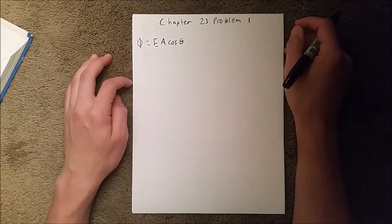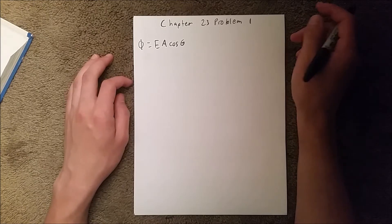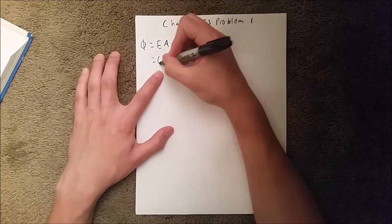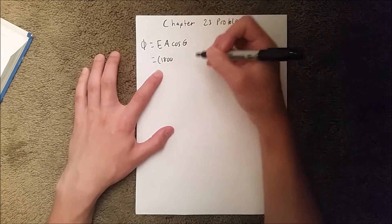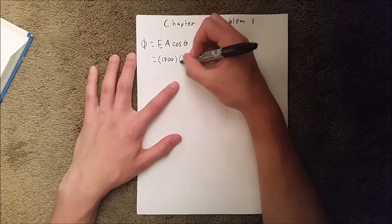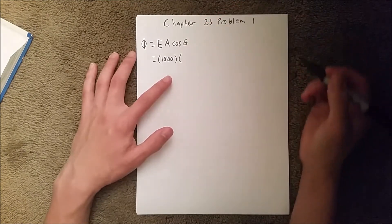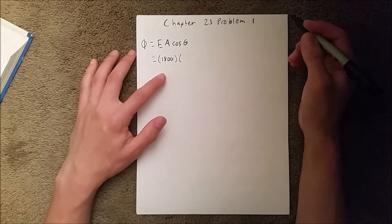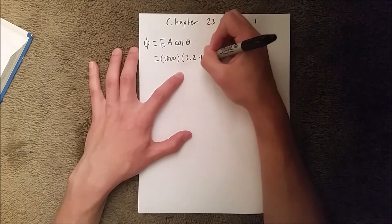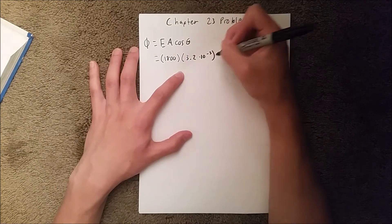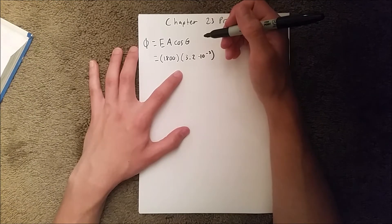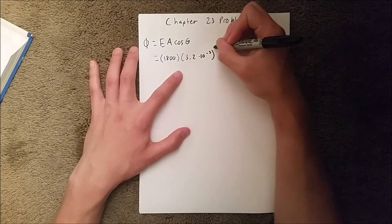We're given the E field so we can directly plug in our values, which is 1800. Our area is given as 3.2 millimeters, which we need to convert to meters, so we have 3.2 × 10^-3. We also need to account for the fact that this is a square and each side measures 3.2 millimeters, so we need to square that.